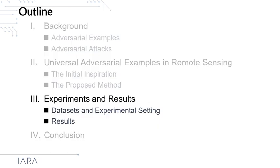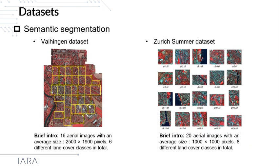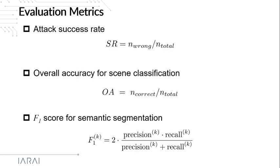Now let's see the experimental results. In this study, we consider two types of tasks: scene classification and semantic segmentation. For scene classification, we use the UCM and AID datasets. For semantic segmentation, we use the Vaihingen and Zurich Summer datasets. The evaluation metrics include the attack success rate, overall accuracy, and F1 score.